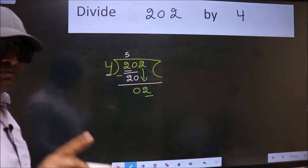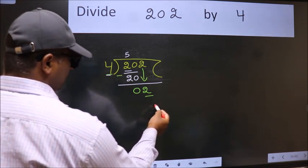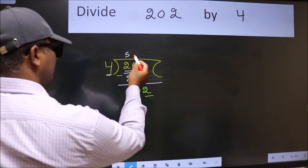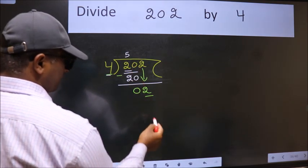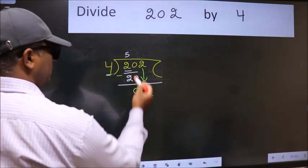Instead of that, what we should think of doing is, which number should we take here? If I take 1, we will get 4. But 4 is larger than 2. So what we do is, we take 0.